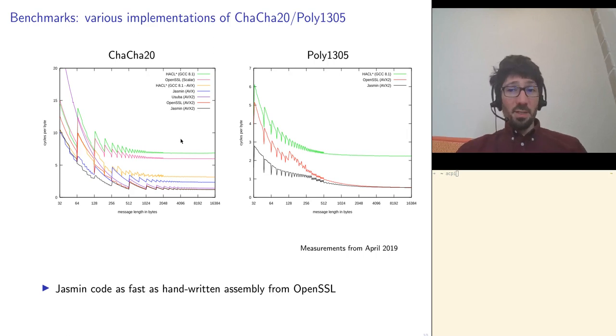I mentioned in the beginning of this talk that we want to deliver very strong guarantees without compromise on performance. Let's have a look at a few measurements. Here, we report the time it takes to process a single byte of message, depending on the total size of the message, and this for several implementations. What we can observe is that the Jasmin implementation, like the black curve here, provides similar performances as the best handwritten assembly that is taken from OpenSSL.